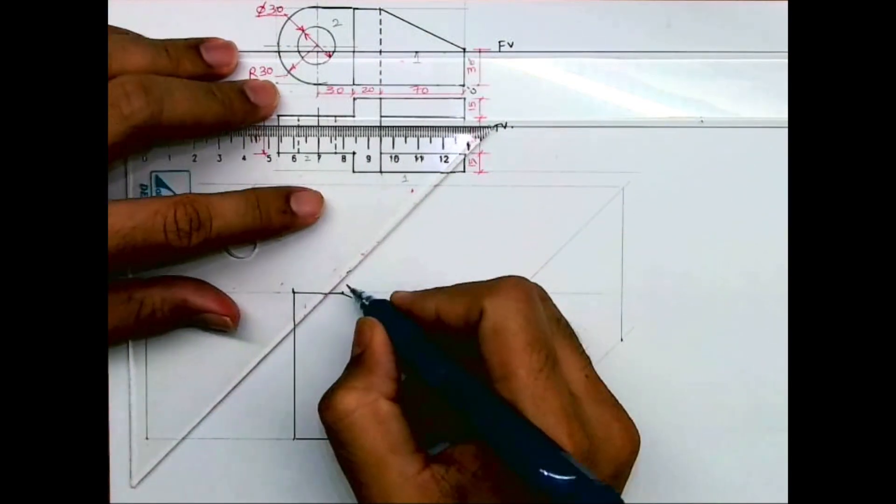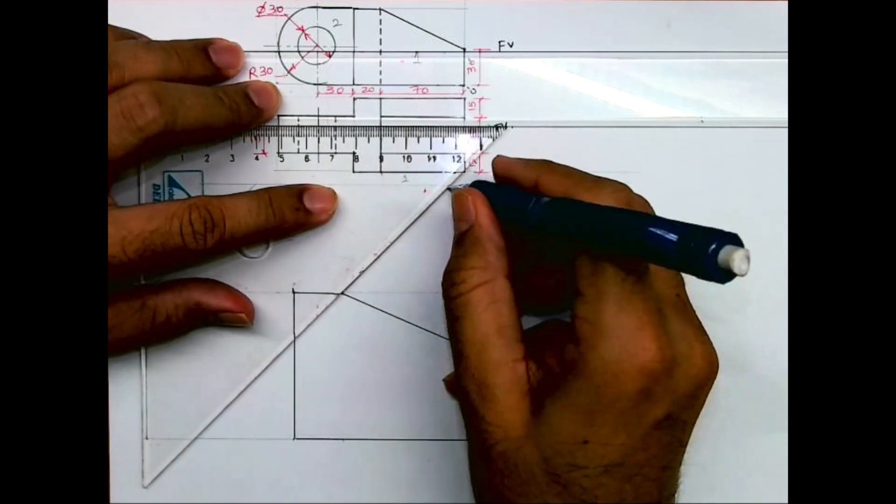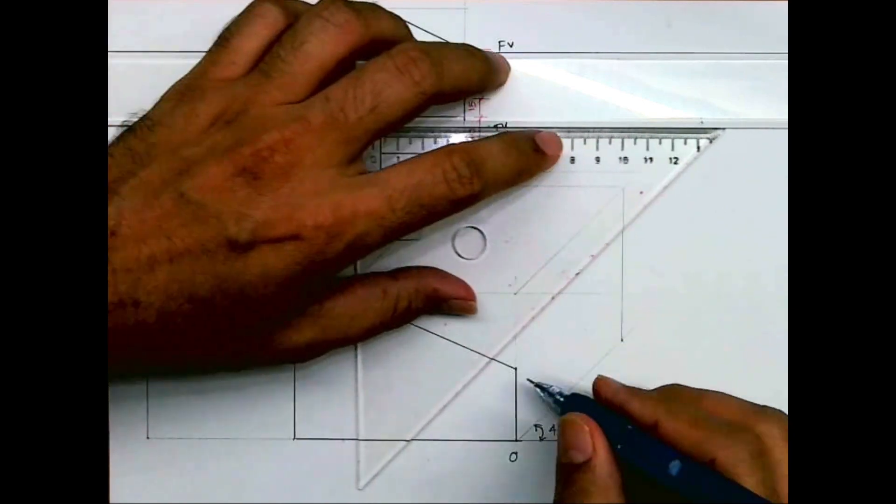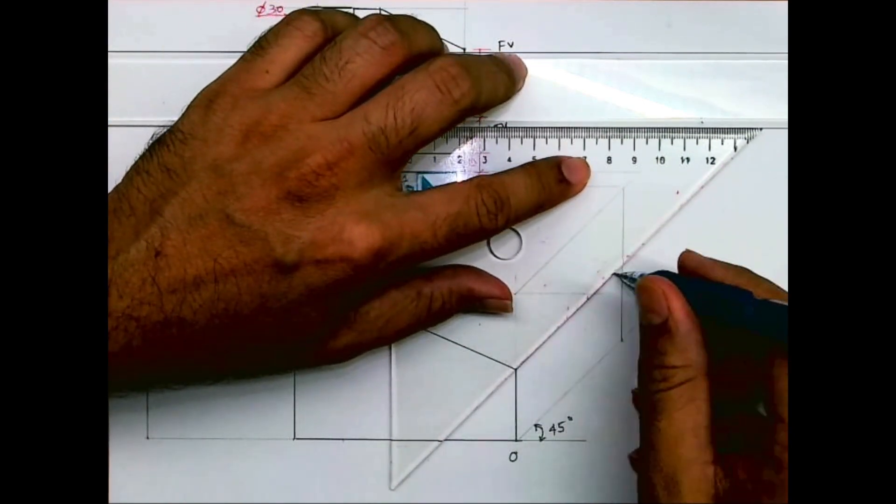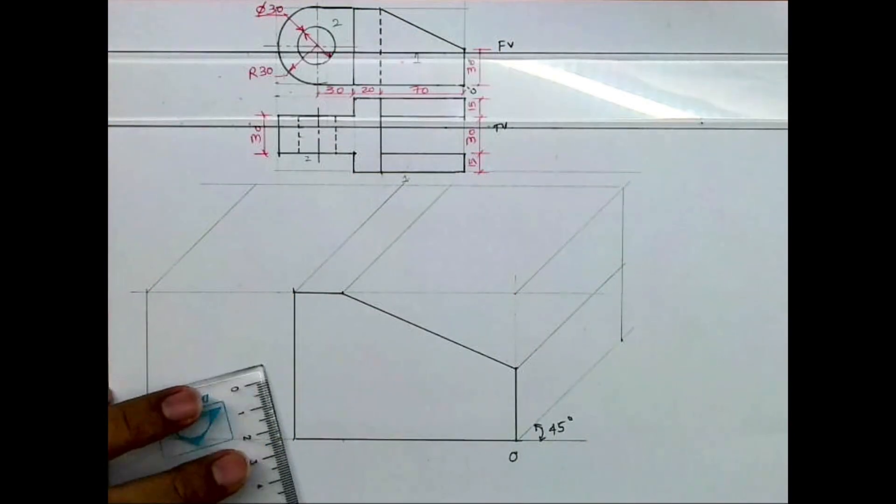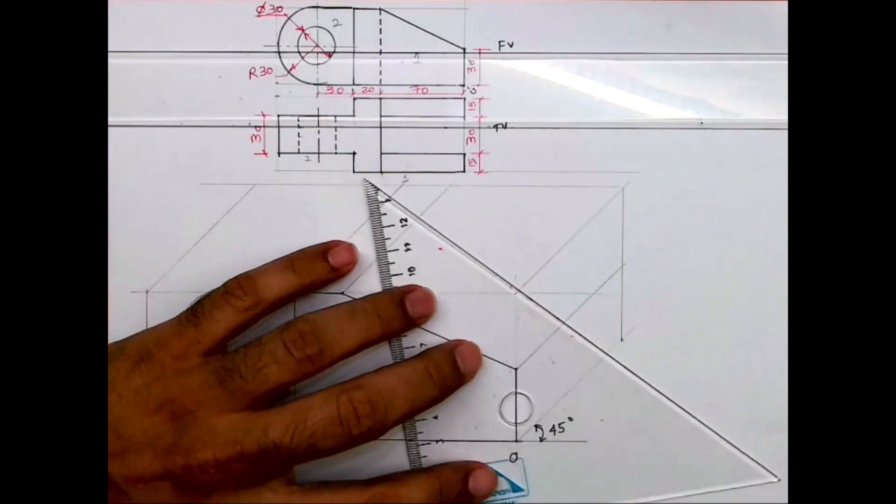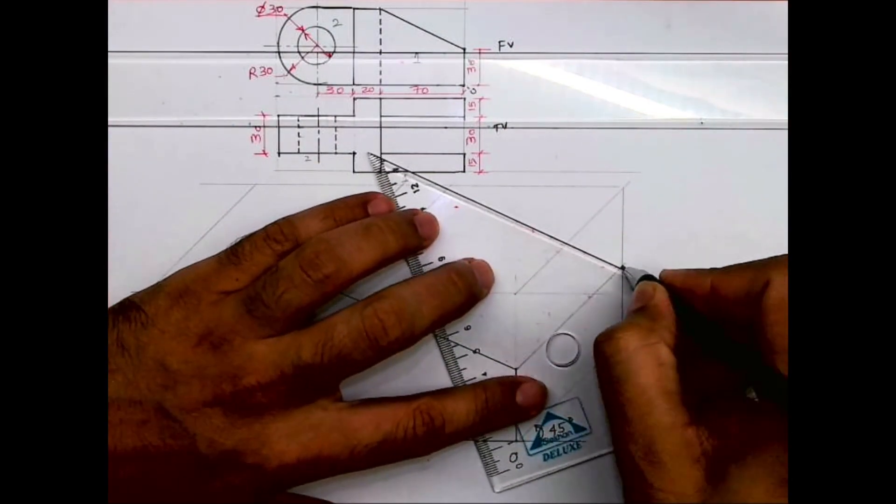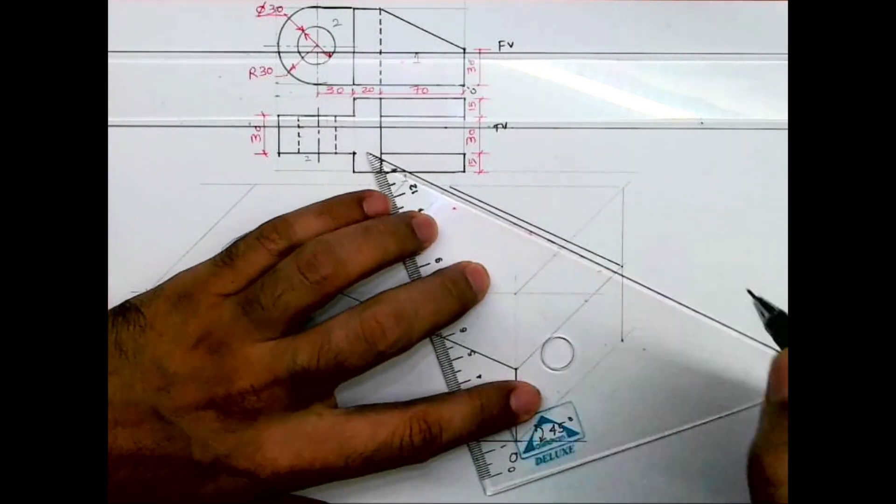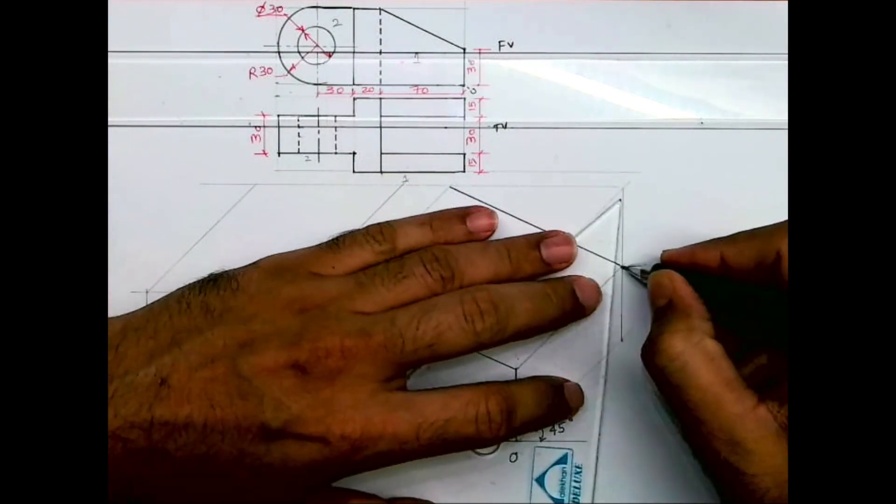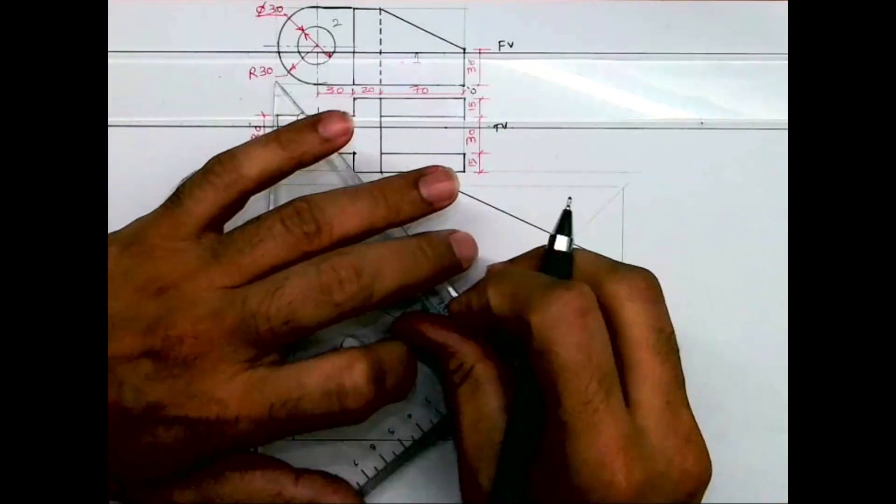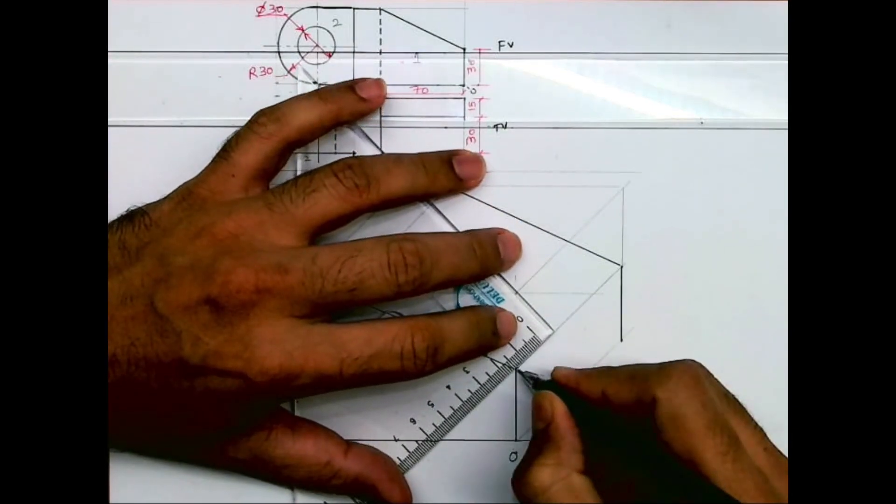Now whatever is there in the front, the same thing is behind. With that concept I will take this behind. We'll join this. This will be vertical. Now if you see in top view it is 15, 15, so I will mark 15.